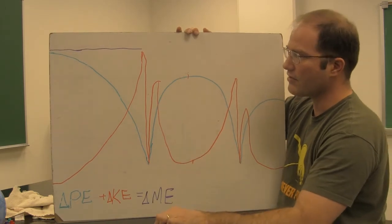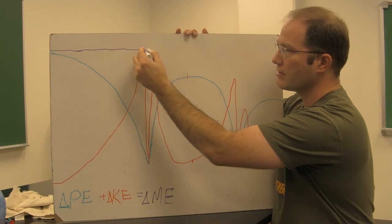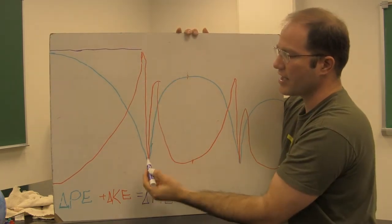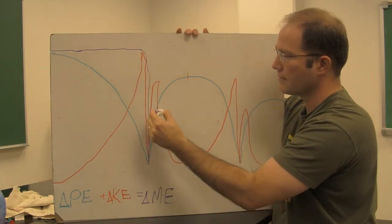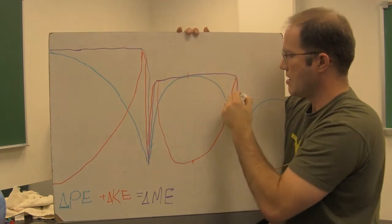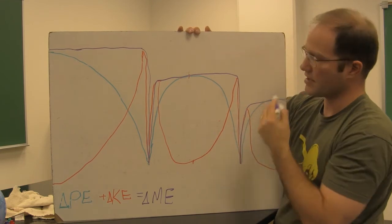So how does our mechanical energy look during this time? Well, our mechanical energy, because potential and kinetic are zero, it also goes to zero. Gets back and becomes the sum of the two. Goes to zero at the next bounce, and comes back and it's the sum of the two.